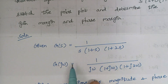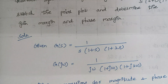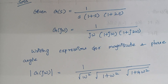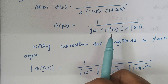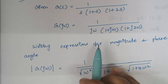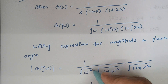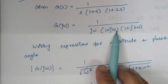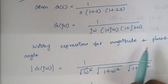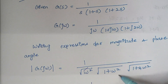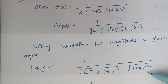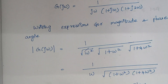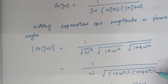The first step is to replace S by j omega, and then we frame an expression for the phase plot and the magnitude plot. For the magnitude expression, we square omega and take the square root. So it is omega times the square root of omega squared, which simplifies, and then square root of 1 squared plus omega squared gives us 1 plus omega squared. For the last term, 1 plus 2 omega whole squared equals 4 omega squared. This is the final simplified form of the magnitude expression.